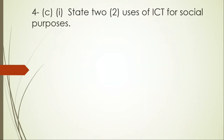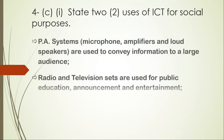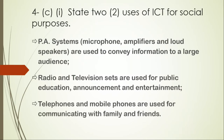Now question four C-i: state two uses of ICT for social purposes. First, PA systems — made up of microphones, amplifiers and loudspeakers — are used to convey information to a large audience, mostly at marriage ceremonies, church services or funerals. Second, radio and television are used for public education, announcements and entertainment. Third, telephones and mobile phones are used for communicating with family and friends, with social media platforms like WhatsApp, Facebook and Instagram for social purposes.